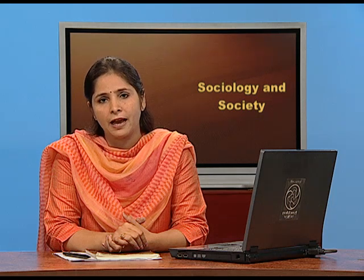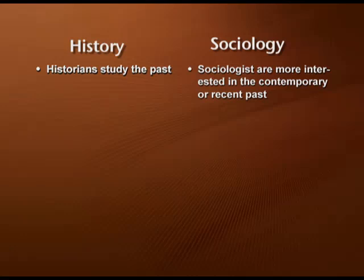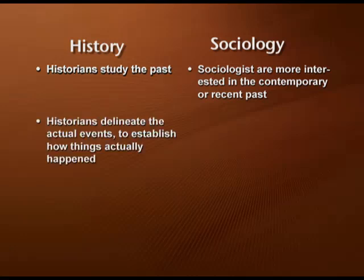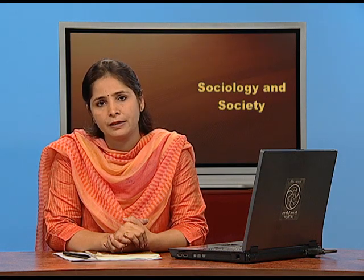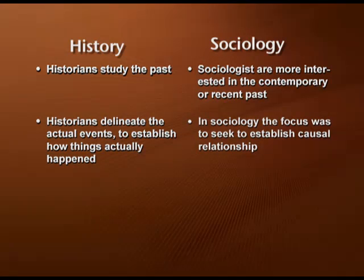There is a difference between Sociology and History. Historians study the past, but sociologists are more interested in the contemporary or recent past. Historians delineate actual events to establish how things happened — this was the approach of conventional historians. But in Sociology, the focus is to establish the causal relationship: what is the cause-and-effect relationship between particular events? This is what sociologists do.